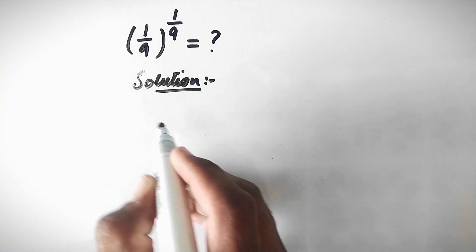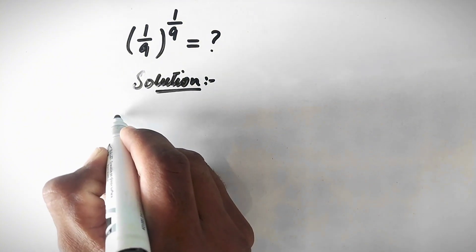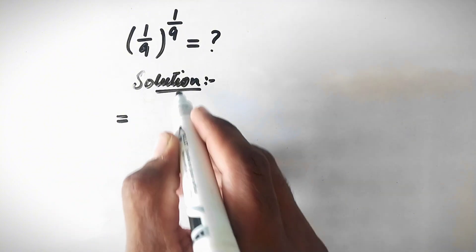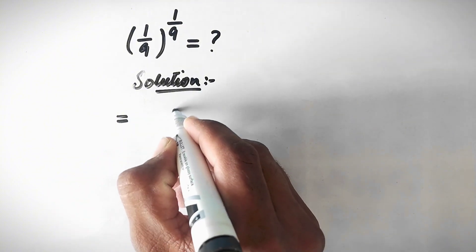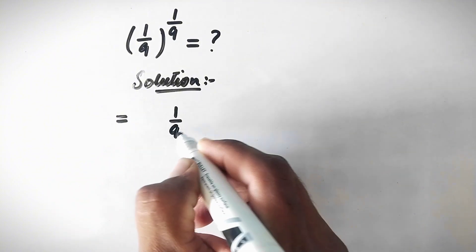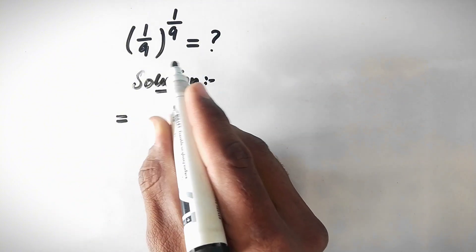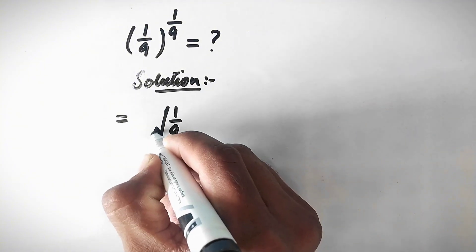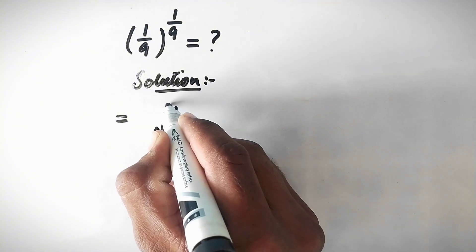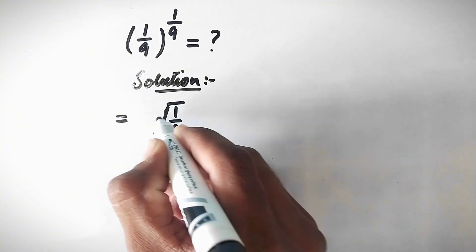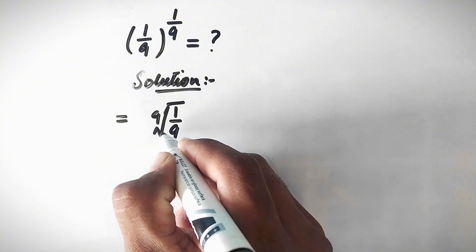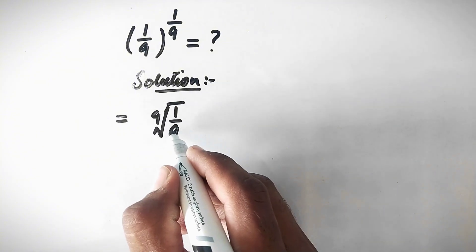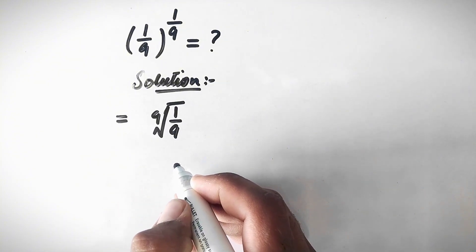In the first step, we write 1 over 9 to the power 1 over 9, which can be written as the 9th root of 1 over 9.